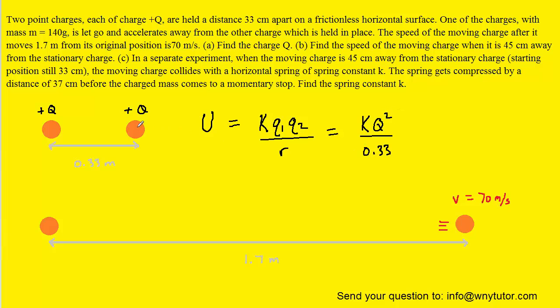When that second charge is released and starts moving to the right, some of the potential energy that was initially present will become the kinetic energy of this charge. But at the same time there will still be electrical potential energy between the two charges because they're still a relatively close distance away from each other.